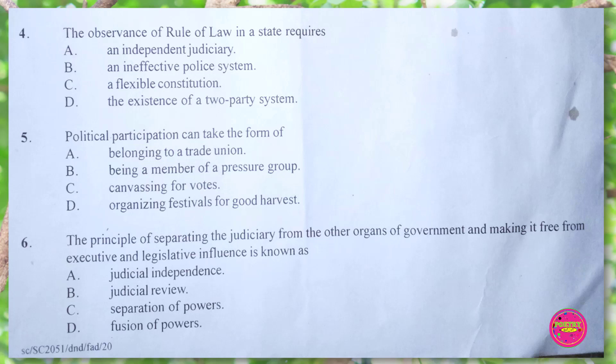Question 5. Political participation can take the form of: A. belonging to a trade union, B. being a member of a pressure group, C. canvassing for votes, D. organizing festivals for good harvest. The correct answer is C. canvassing for votes.